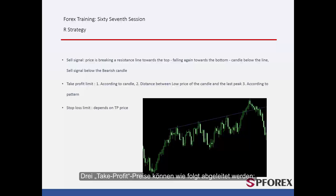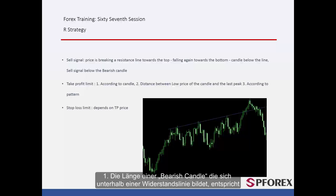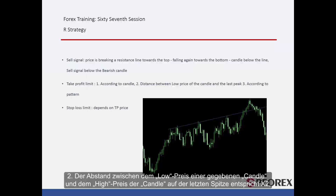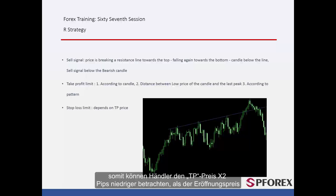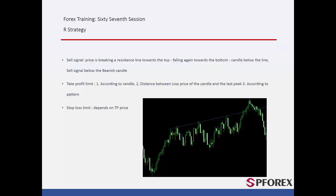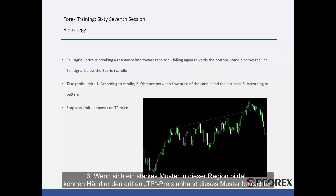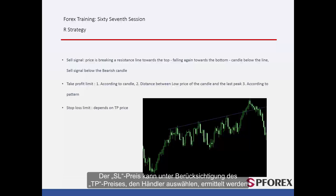Three take profit prices can be derived as follows. 1. The length of a bearish candle that forms below the resistance line equals X1; thus, the first TP price can be X1 pips lower than the entry price. 2. The distance between the low price of a given candle and the high price of the candle on the last peak equals X2; thus, a trader can consider TP price X2 pips lower than the entry price. 3. If a powerful pattern forms in this region, a trader can consider the third TP price via this pattern. SL price can be determined considering the TP price that the trader selects.